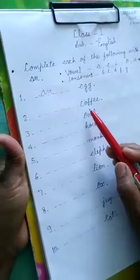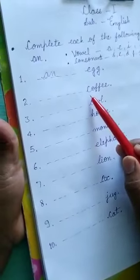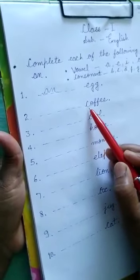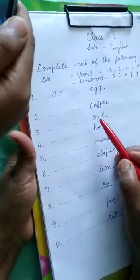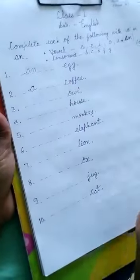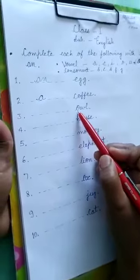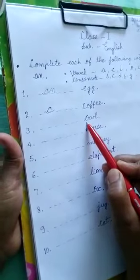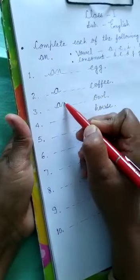Next is coffee. Which letter does the spelling of coffee start with? C. We have to check the first letter — C is a consonant, so we have to write A. Next is owl. Owl starts with O, which is a vowel, so we have to use AN.